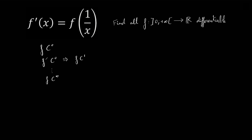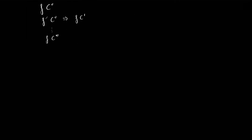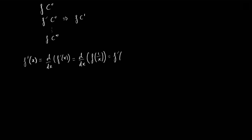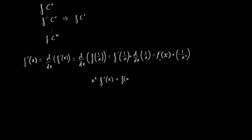Now that we have proven that, we can differentiate f as many times as we want. We can write that f''(x) is equal to the derivative of f'(x), which equals the derivative of f(1/x). By the chain rule, this equals f'(1/x) multiplied by the derivative of 1/x, which is f'(x) multiplied by -1/x². This implies that x²·f''(x) + f(x) = 0.